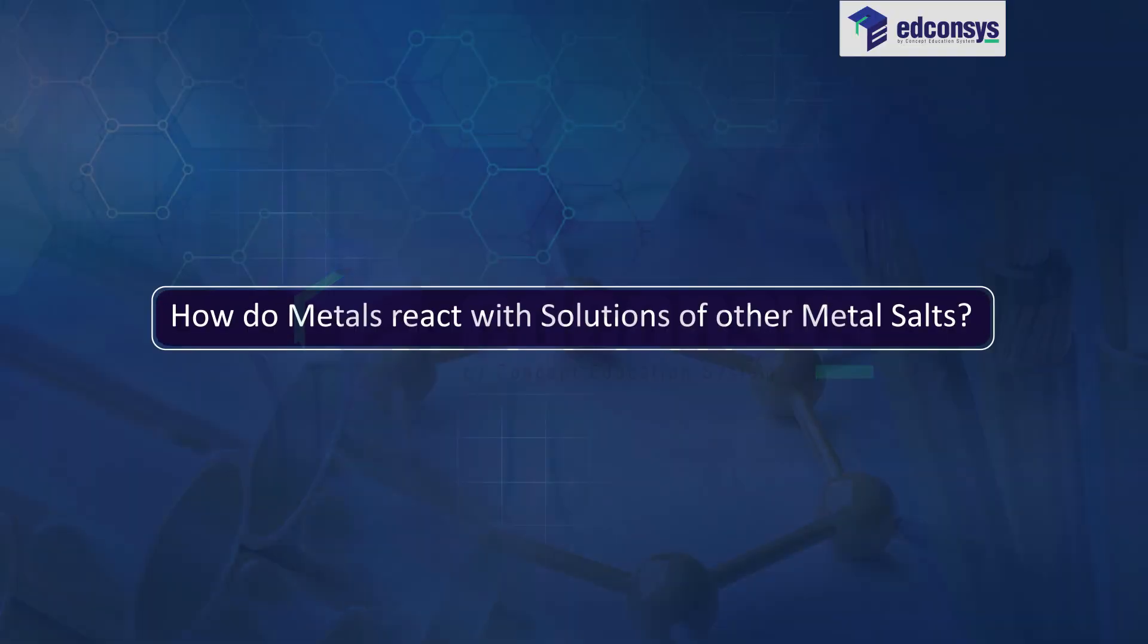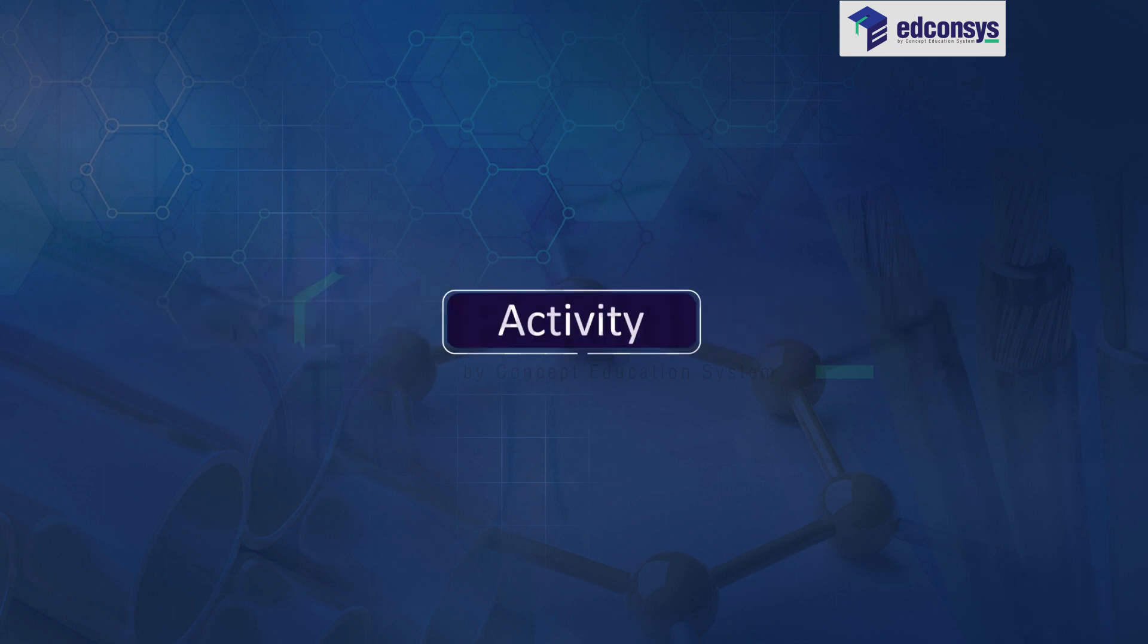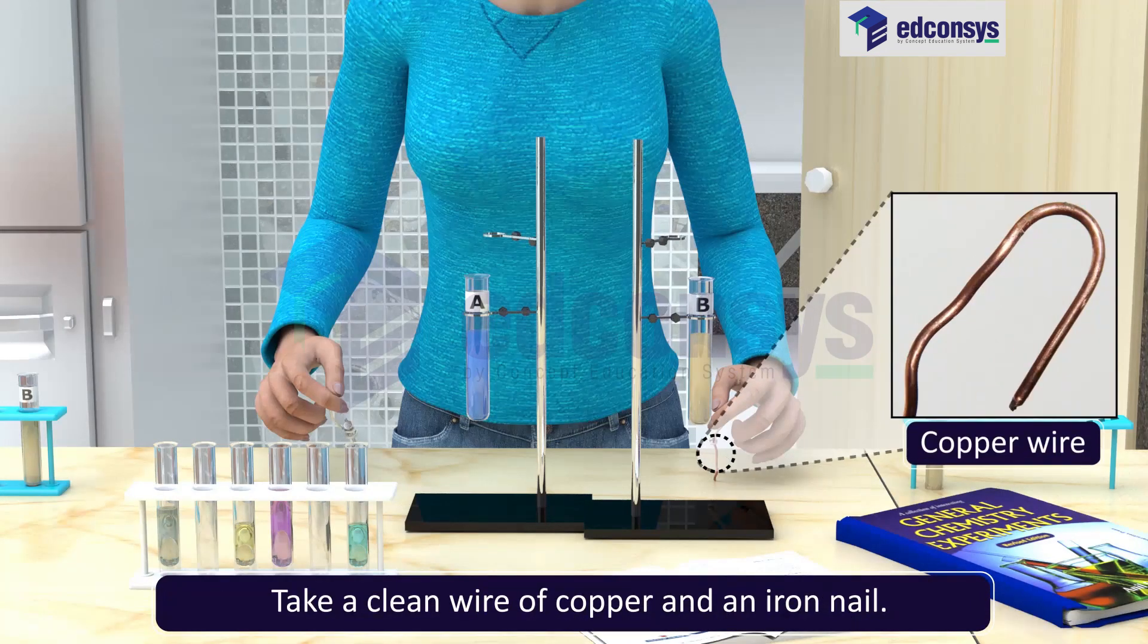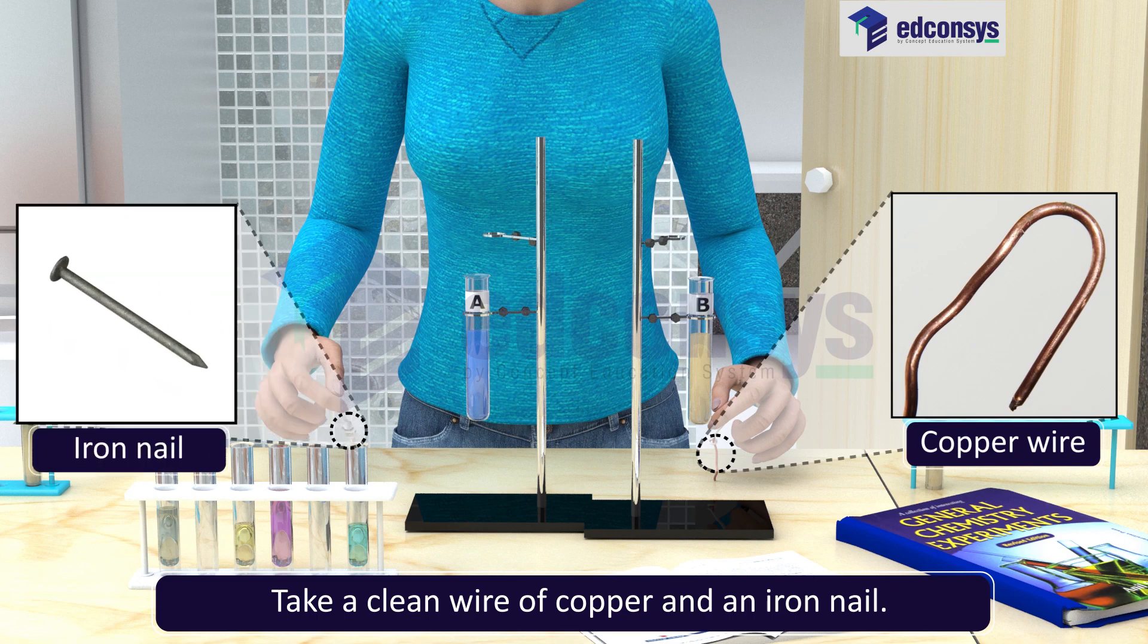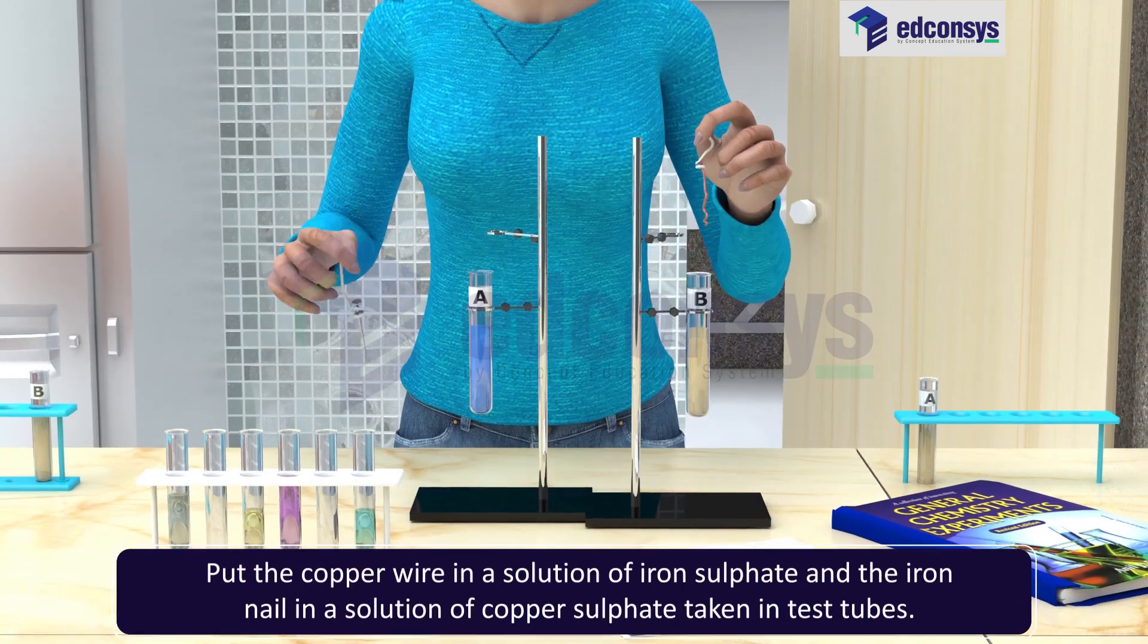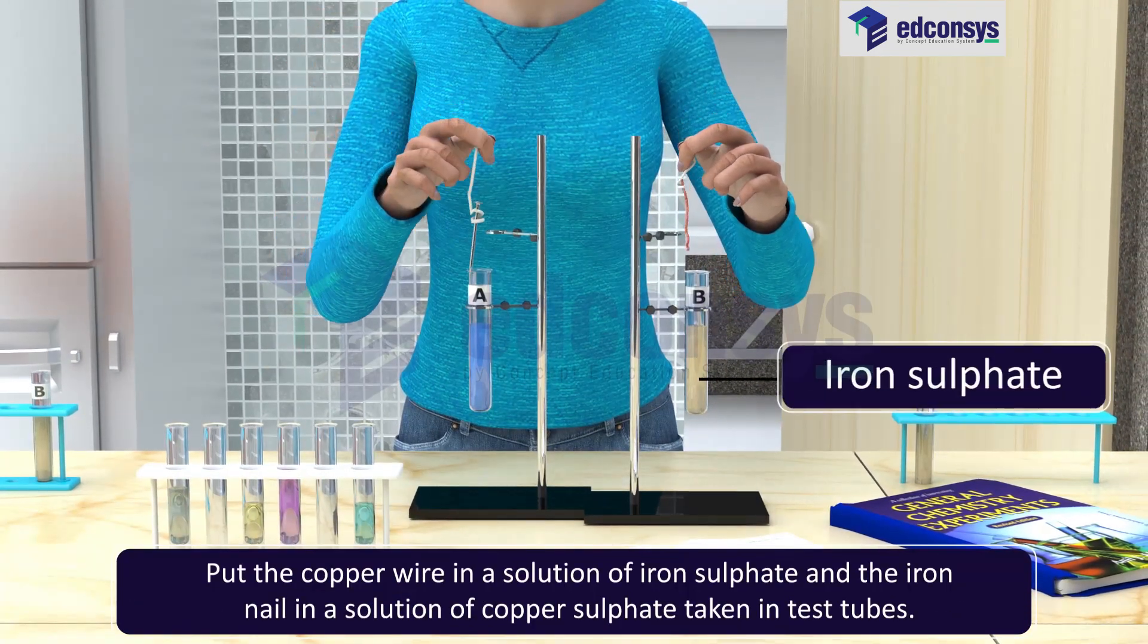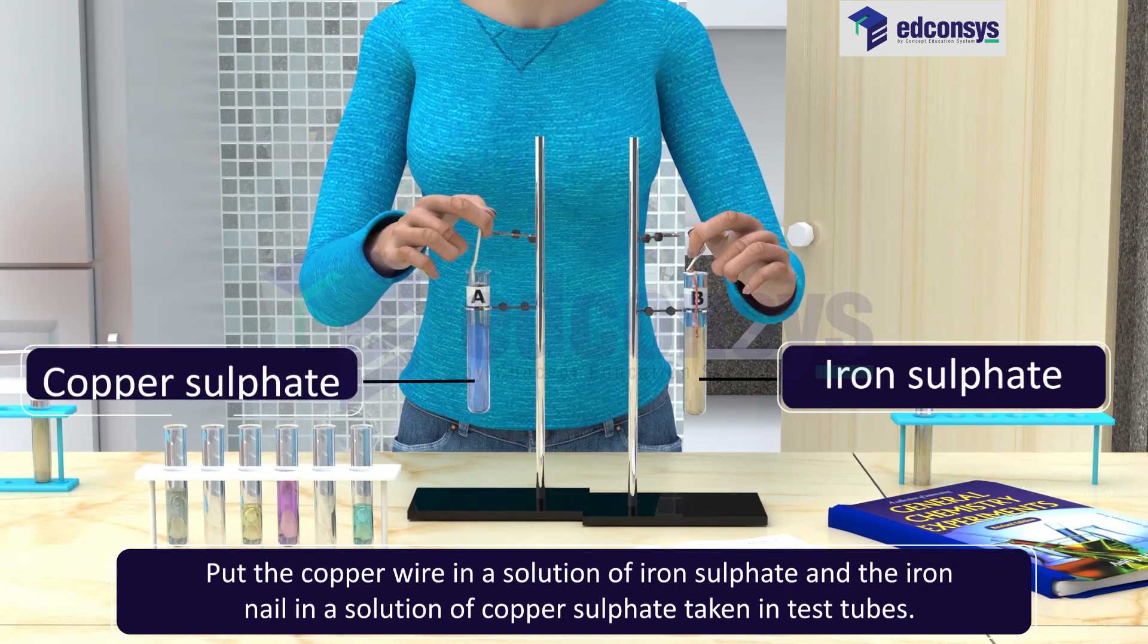How do metals react with solutions of other metal salts? Activity: Take a clean wire of copper and an iron nail. Put the copper wire in a solution of iron sulfate and the iron nail in a solution of copper sulfate taken in test tubes.